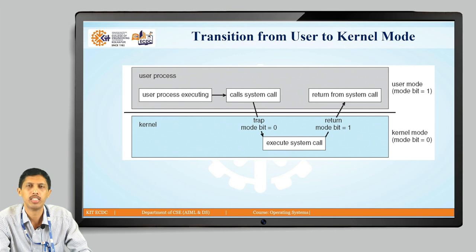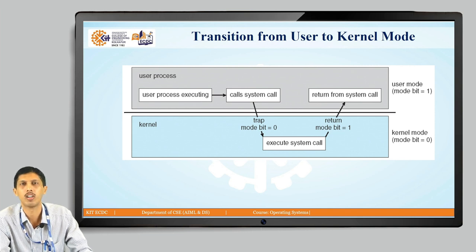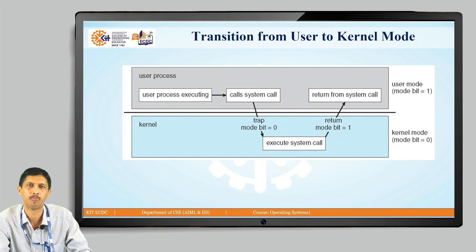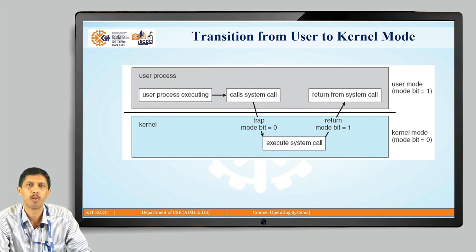In our previous or elementary video, we have come across what is an operating system, its components and services. With that information, we need to know how there is a transition of request from user to kernel modes. In the given figure, it is seen there is a user process and a kernel process. A user process refers to a user program and a kernel is a core program of an operating system.